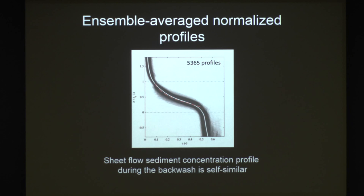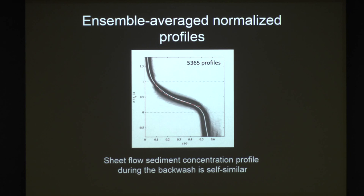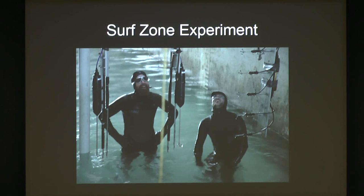We've done comparisons with a Vectrino 2 profiler using its downward ping right next door to one of these sensors from the parent pour study. We used that to track the bed based on the maximum amplitude return and compared that to our approach for finding bed level. They're right on top of each other - within a millimeter. Not spot on, but within a millimeter, so we believe this approach is adequate.